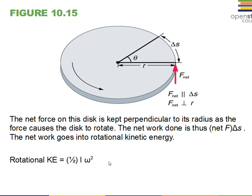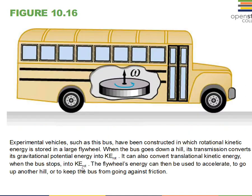So rotational kinetic energy is one-half I omega squared. I is the rotational inertia, and it depends on the shape of the object — the shape determines what the value of I is.